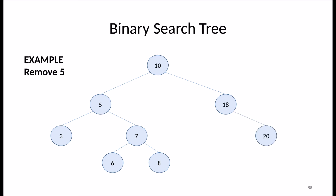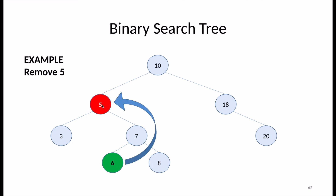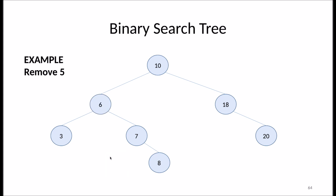For case three, deleting node 5 which has two children: I can't simply update the parent pointer since it has both left (3) and right (7) children. Instead, I find the smallest node in the right subtree. The right subtree has three nodes and the smallest is 6. I copy the value 6 into node 5's position, then delete the original node containing 6. In this case it's a leaf, so I can just remove it. In the worst case it could have a right child, making it a case two deletion, but here we're done.